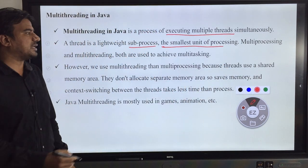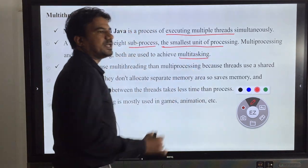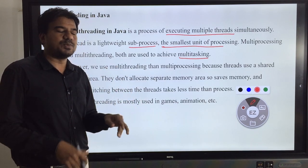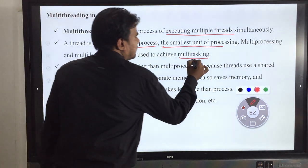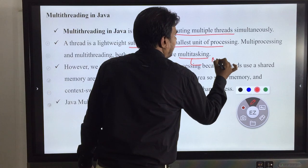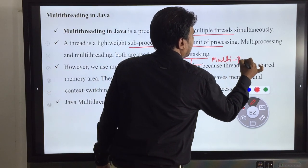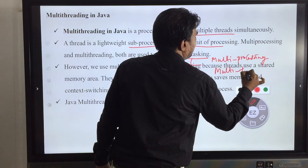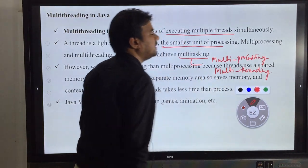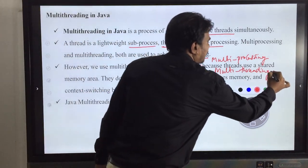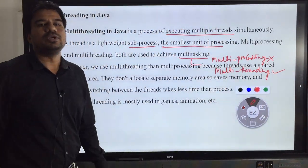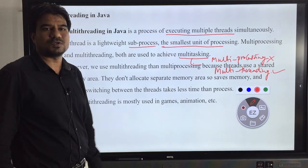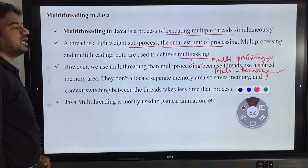Both multi-processing and multi-threading are techniques for achieving multi-tasking. If you execute multiple threads simultaneously or multiple processes simultaneously, both come under multi-tasking. Multi-tasking can be achieved with multi-processing as well as multi-threading. Why multi-threading has priority over multi-processing is what we need to understand in today's session.